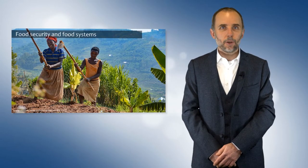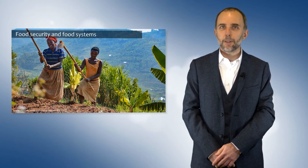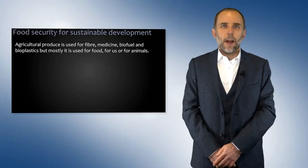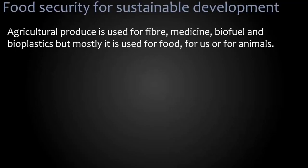Having said that there are a lot of technological developments, most of our food is produced in similar ways to what you can see in this photo. Agricultural produce is used for fiber, for medicine, for biofuels, and more recently for bioplastics. But mostly it's used for food, either for us or for our animals.